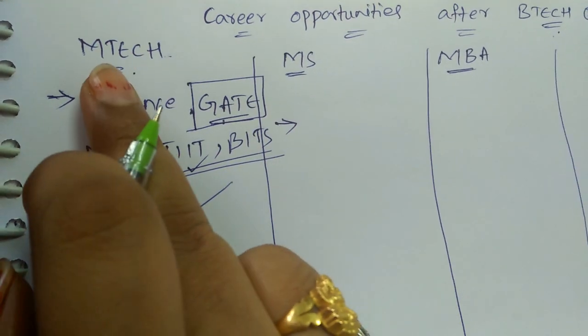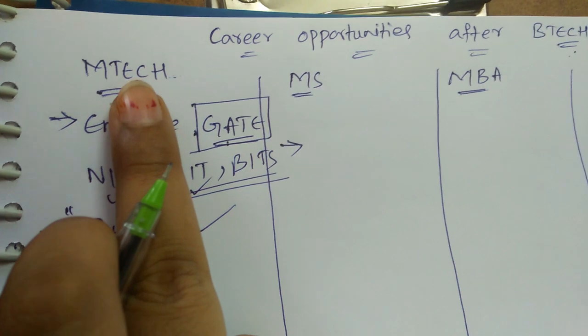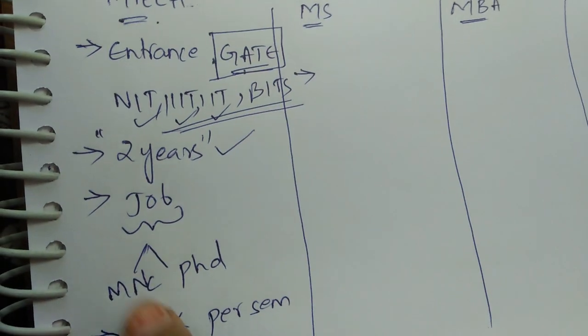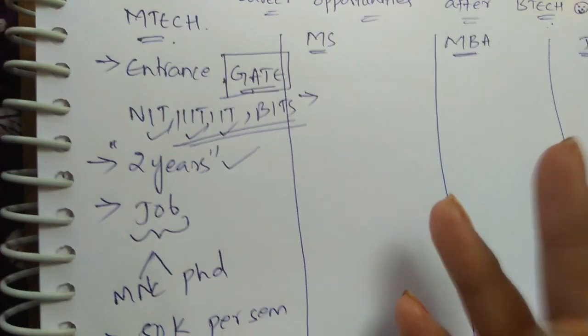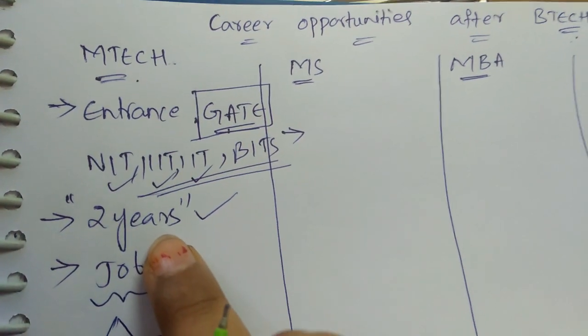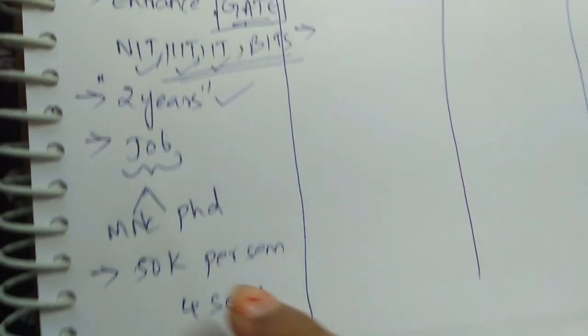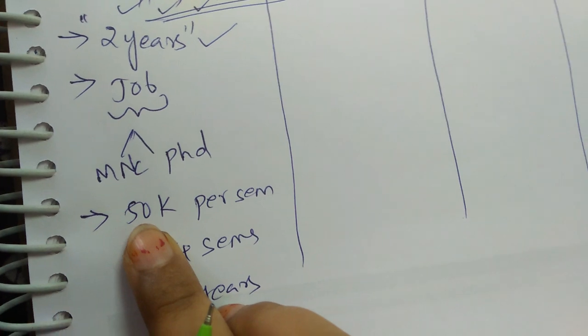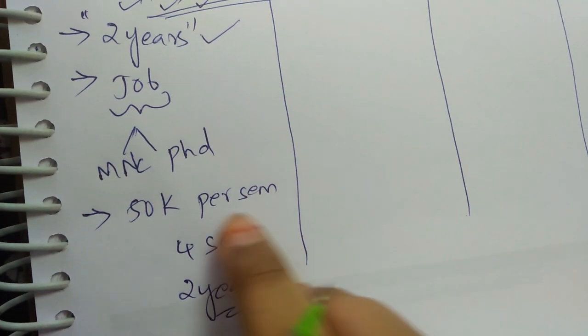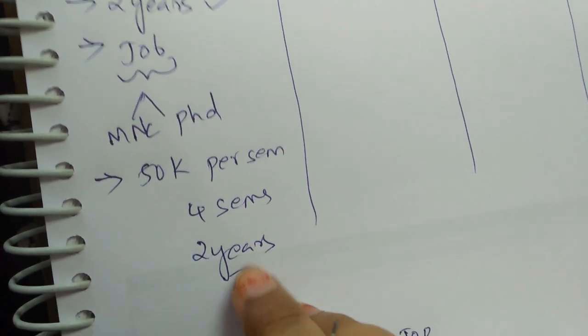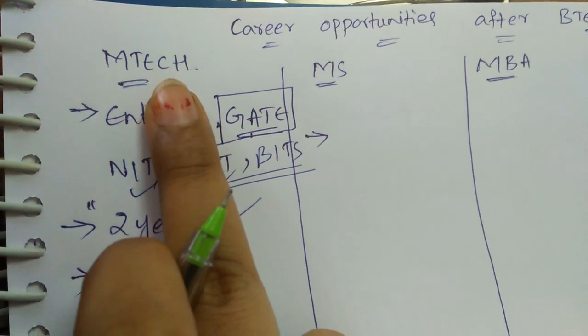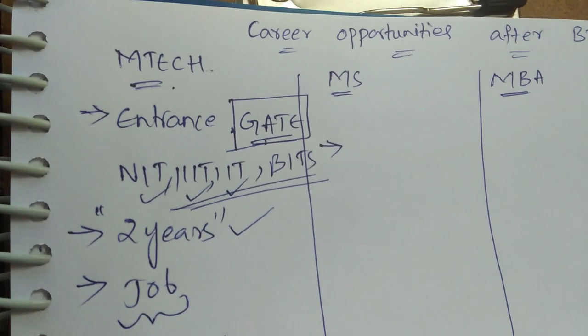Within two years you can complete your MTech and after MTech you can also go for further studies such as PhD or you can directly go to a job in any of the MNC or startup as your wish. Coming to MTech there will be four semesters and college fee for MTech will be differing from college to college but generally there will be 25k to 50k college fee per semester. MTech full form stands for Masters in Technology.